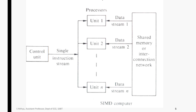The next architecture is SIMD — Single Instruction Multiple Data streams. In this there is a single control unit, and the single instruction stream that comes from the control unit is used by many processors — Unit 1, Unit 2, up to Unit N. Each processor's output is sent to the data streams. The single instruction executes on multiple data, with shared memory or interconnection networks providing the multiple data streams.